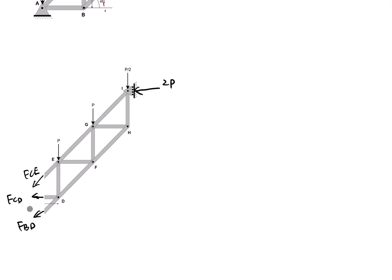We have three unknown forces: FCE, FCD, and FBD. We notice that FCD and FBD both pass through point D. So we can write the moment equation of equilibrium at joint D — this eliminates FCD and FBD, because they have zero moment at joint D.